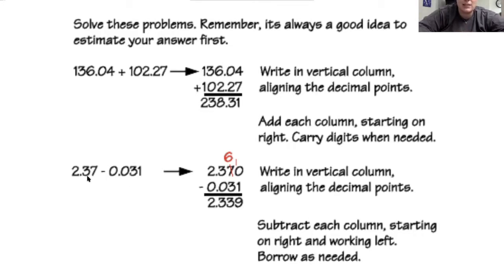For subtraction, again line them up in the vertical column and make sure those decimals are lined up. That is the big part of adding and subtracting decimals. Line them up, subtract each column starting on the right, working left, borrow as needed. We're going to go through a couple examples so you have reminded your brain what that looks like and then you'll be good to go.